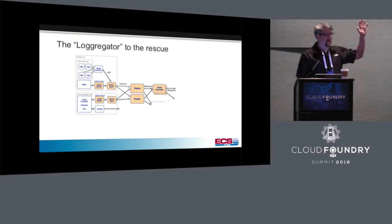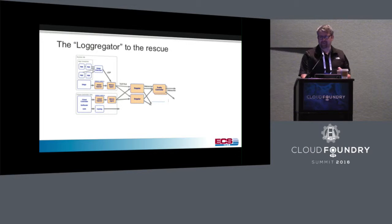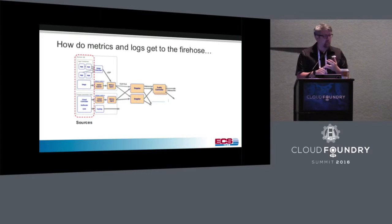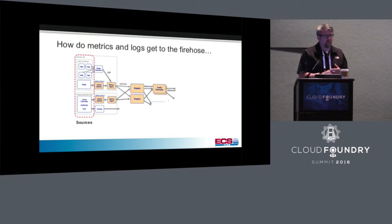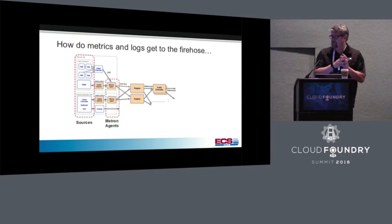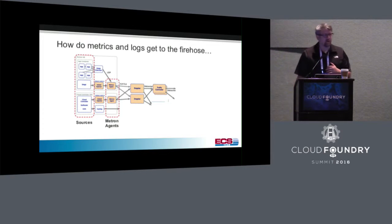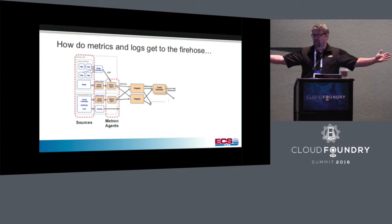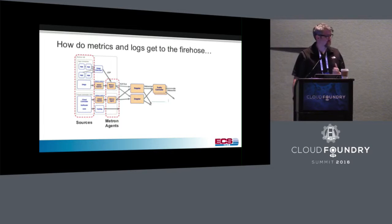You've all heard what the Loggregator is — it's one big subsystem of Cloud Foundry with a bunch of components. What you have is a bunch of sources: apps, the Diego Brain, UAA, Cloud Controller — all components of Cloud Foundry are considered sources. For every job or VM, whether you talk in BOSH terms or IaaS terms, you have a Metron agent, which is the collector of all those sources — multiple sources on a cell, for example.